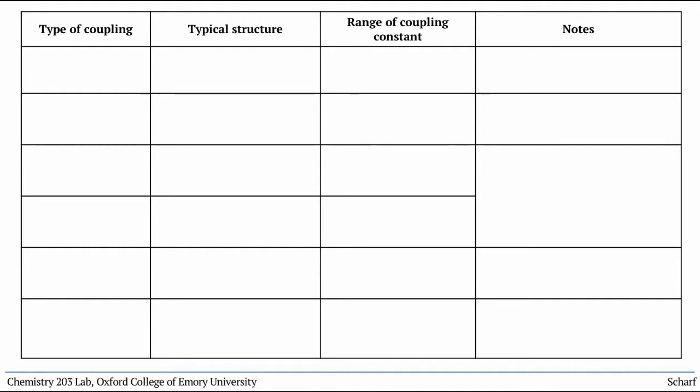Differences in J values can be used to help us determine stereochemical and spatial relationships between hydrogens within a molecule, because different ranges of J values are found for different arrangements of neighboring protons.